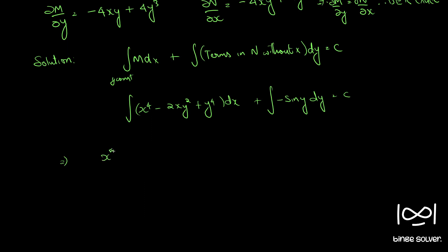You get x⁵/5, y is a constant, so 2y²·x²/2 + y⁴x minus the integral of sin y is -cos y, so plus cos y = C.